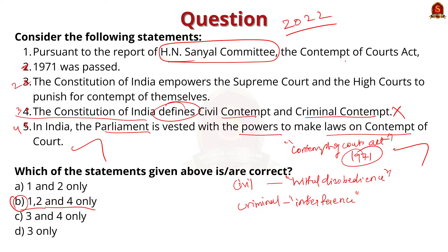The Constitution of India empowers the Supreme Court and High Courts to punish for contempt of themselves — as per Article 129. High Courts also have the power to punish contempt for lower courts under their respective jurisdiction, as per Article 215 of the Indian Constitution. Hence statements one and two are correct. However, the degree of power given to the Supreme Court is not equal to that of the High Court.